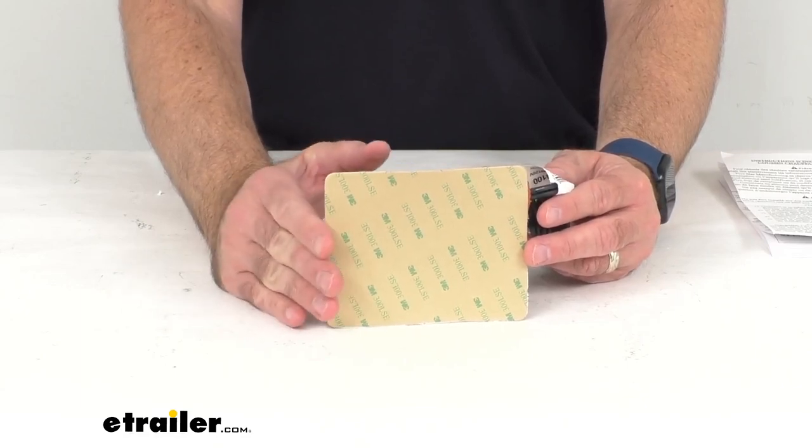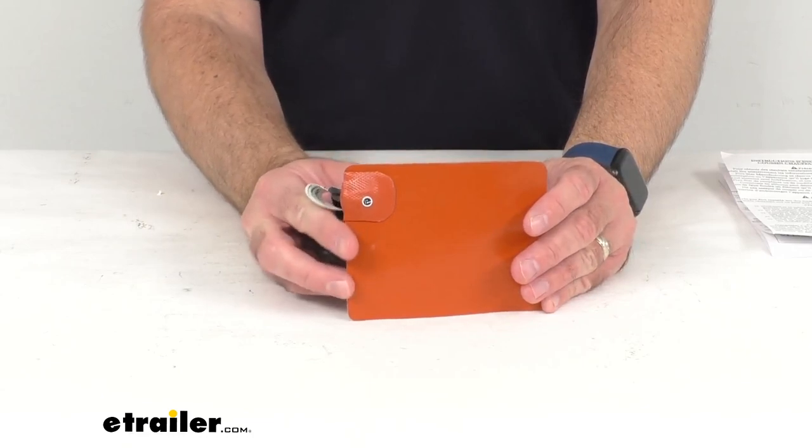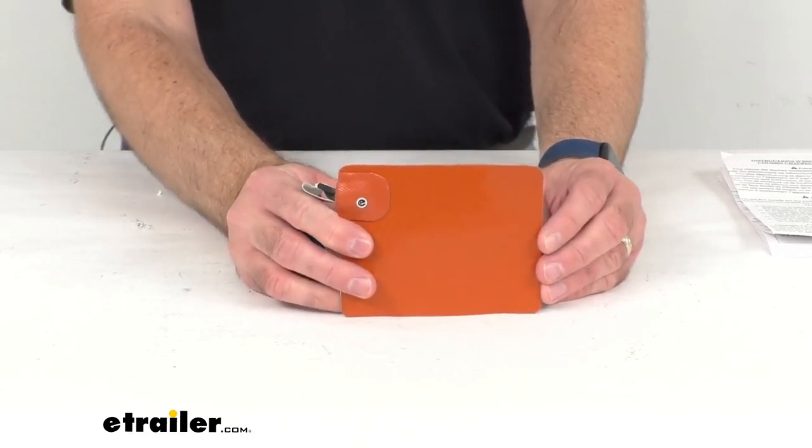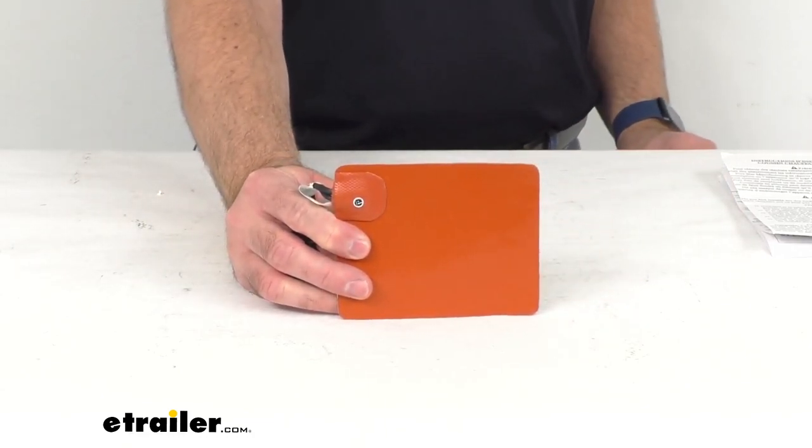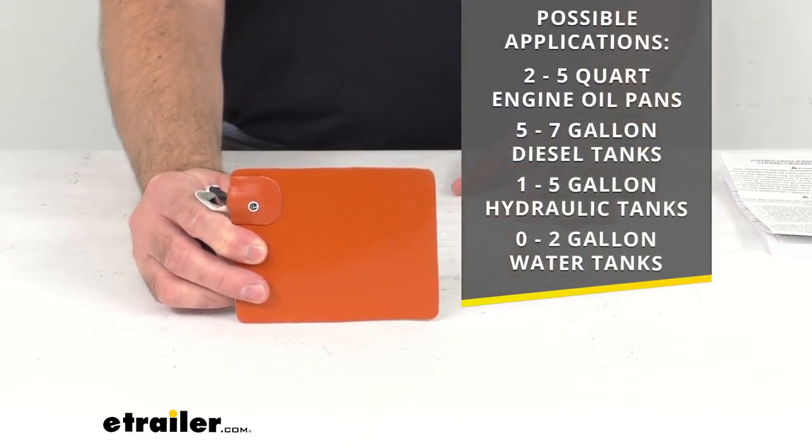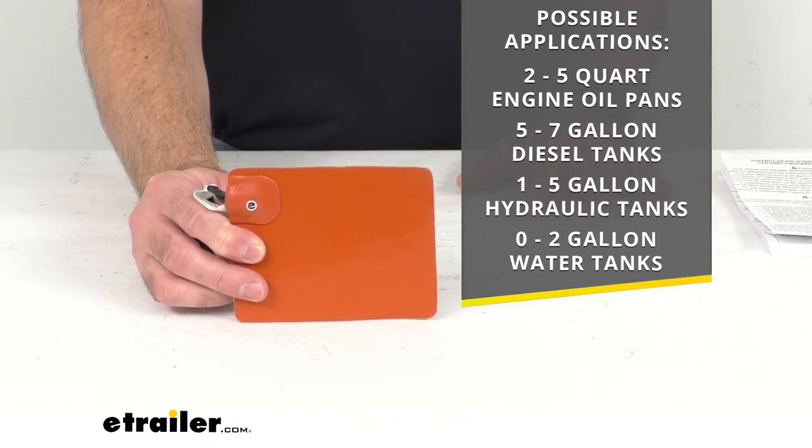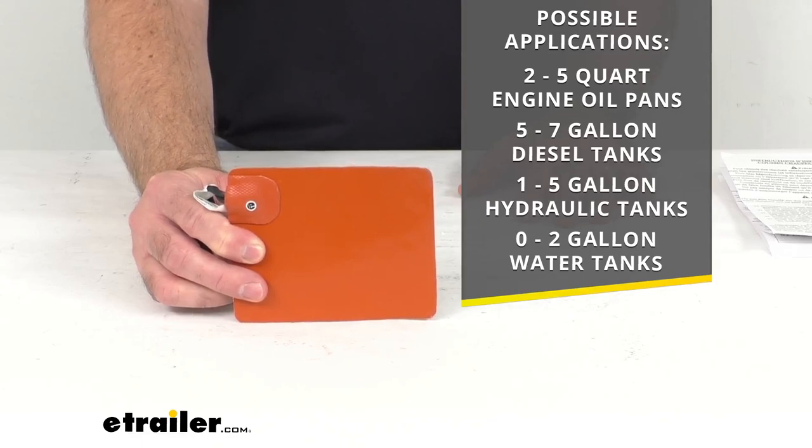This small 100 watt heating pad is going to give you the best results with oil pans that are up to 5 quarts and tanks that are up to 7 gallons in size. On your screen I am listing some possible applications there for you. This can work with a 2 to 5 quart engine oil pan, a 5 to 7 gallon diesel tank, 1 to 5 gallon hydraulic tank, and 0 to 2 gallon water tanks.